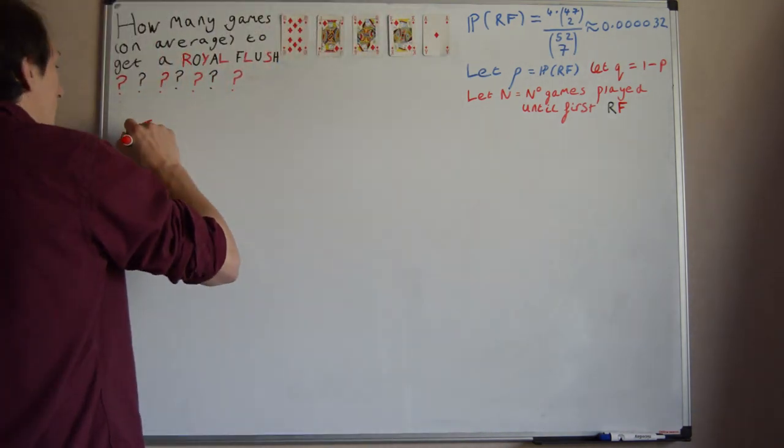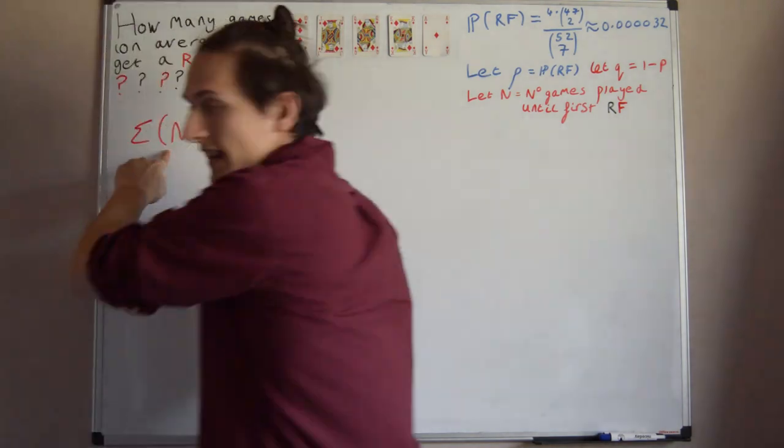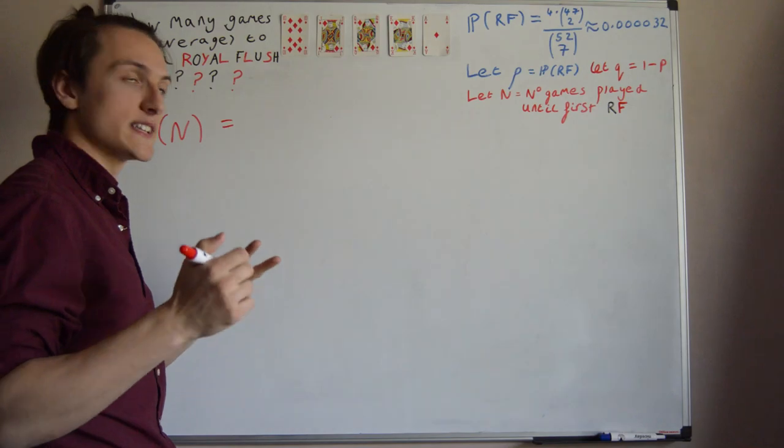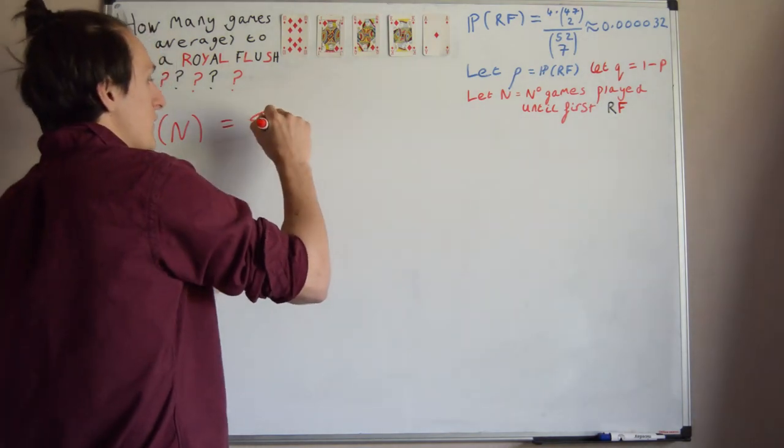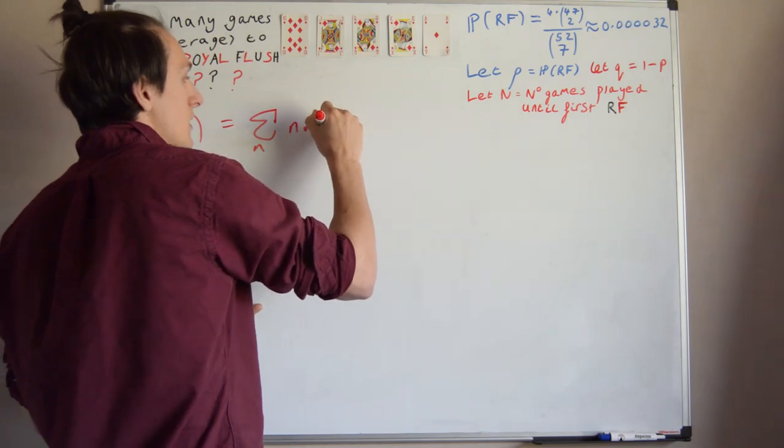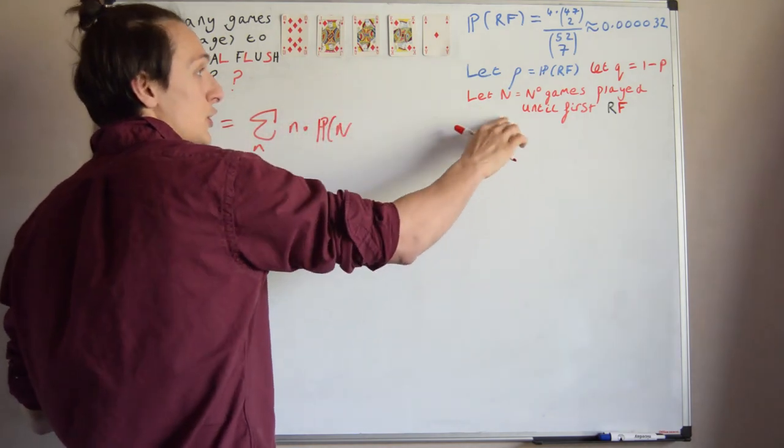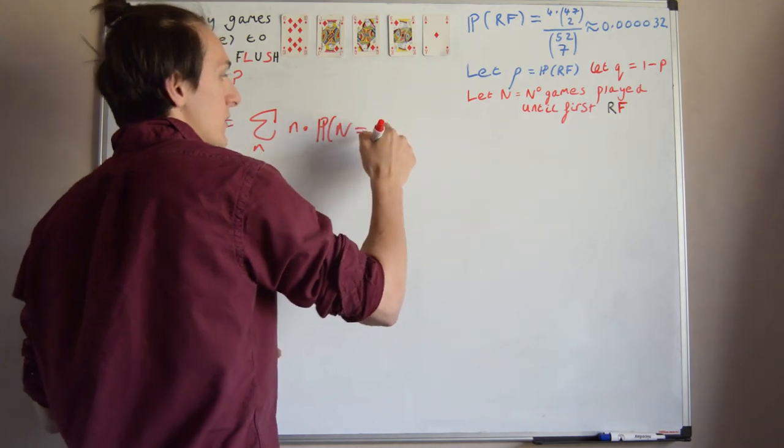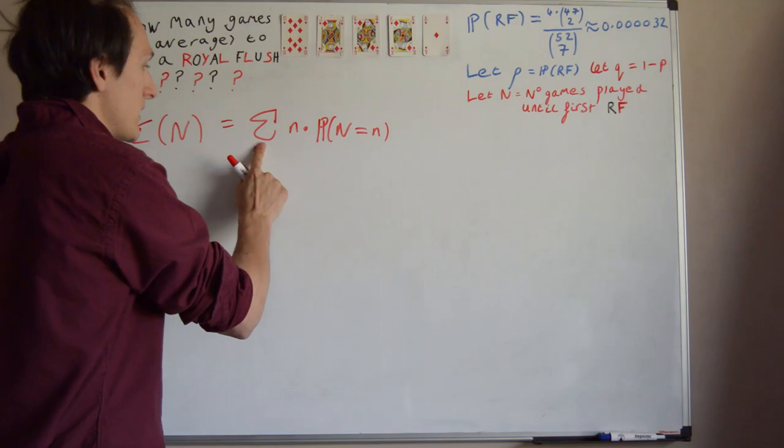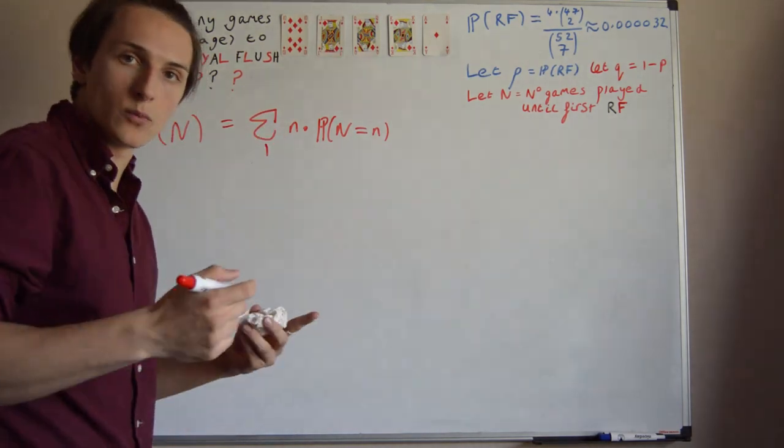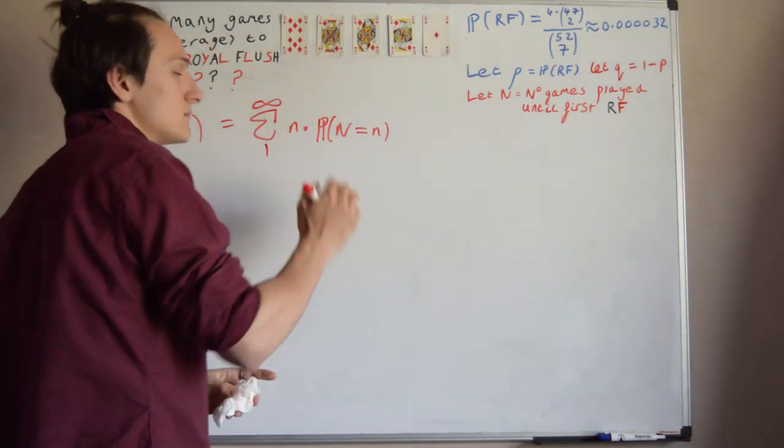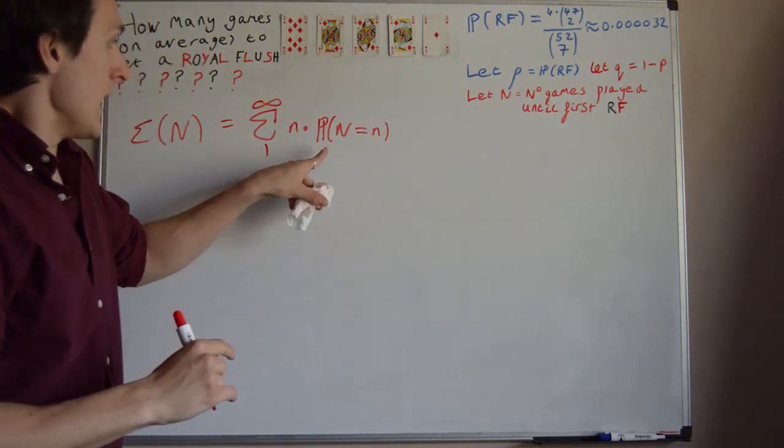So we want to work out the expectation of n. Well, how do you define expectation? This is purely going over the definition. We have the sum of all possible values of n, of n times the probability that the number of games played is equal to n. And the number of games, I mean, it starts from 1, we have to play at least one game to get one Royal Flush, and n can be as large as we want, right?